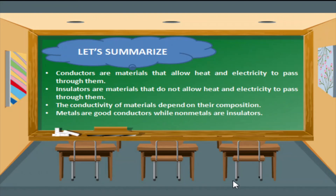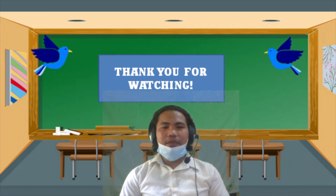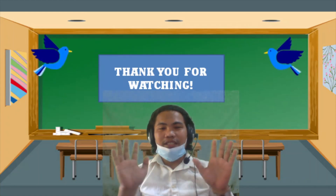Now let us summarize what we have discussed in this lesson. Conductors are materials that allow heat and electricity to pass through them. Insulators are materials that do not allow heat and electricity to pass through them. The conductivity of materials depends on their composition. Metals are good conductors while non-metals are insulators. Thank you for watching. See you soon in our next video lesson.